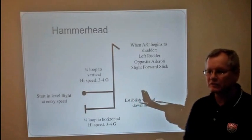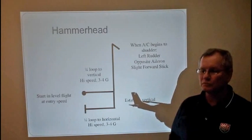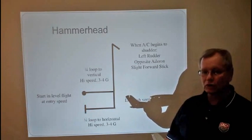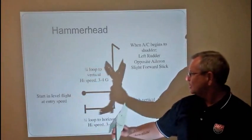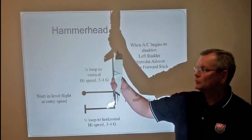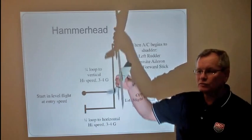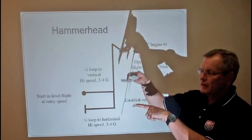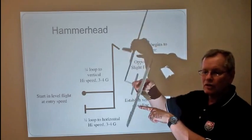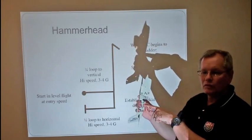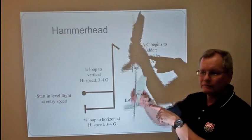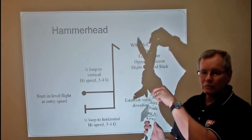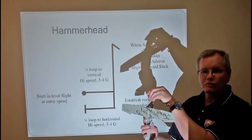And now one of my favorite maneuvers, my signature maneuver in the decathlon in Sportsman was the hammerhead. What we're trying to make this look like is that as you pull up vertical and come to a stop, you want to do the pivot in such a way that there is no pitching and no rolling of any kind. Now at this point the engine is going at full blast and it would be very easy for the torque of the airplane to try to twist you around.